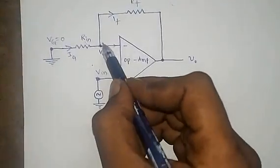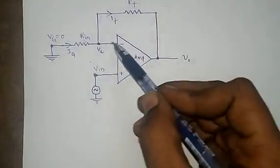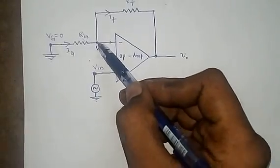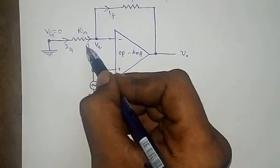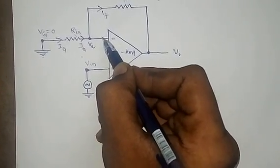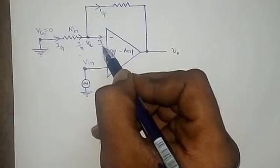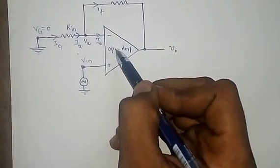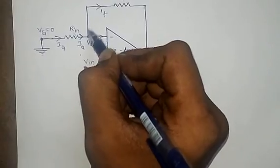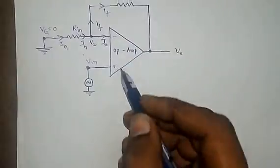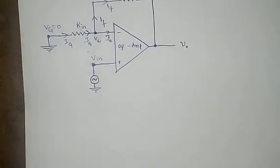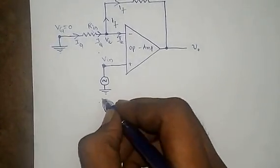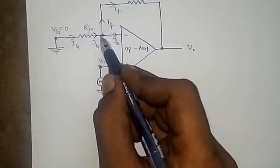Apply KCL at point VA. The current IG is entering at this point, and the current IF is leaving this point.